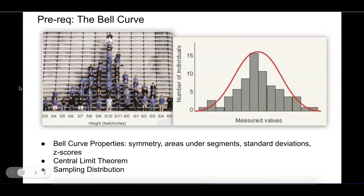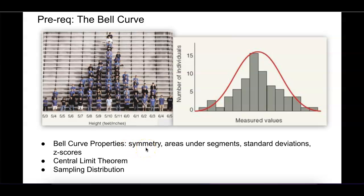The concepts in this lecture would take place about halfway through an introductory probability and statistics course, so there are some prerequisites I'm assuming you already have. You either already covered the chapter on hypothesis testing or you're about to. You should already understand basic bell curve properties, the symmetry of it, and that there are certain proportions of probability under certain segments of the curve. You should know what a standard deviation is, what z-scores are, and you should have covered the central limit theorem and understand what a sampling distribution is.